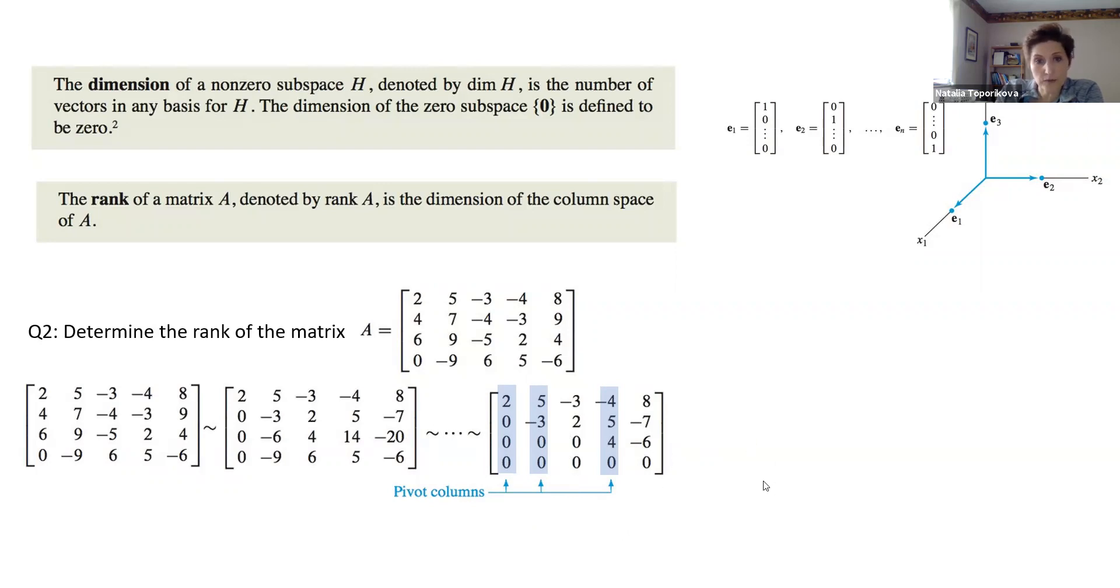This number of pivot columns actually gives us exactly the rank of the matrix. So for this matrix, the rank is equal to 3. And that's all we need to find the rank.